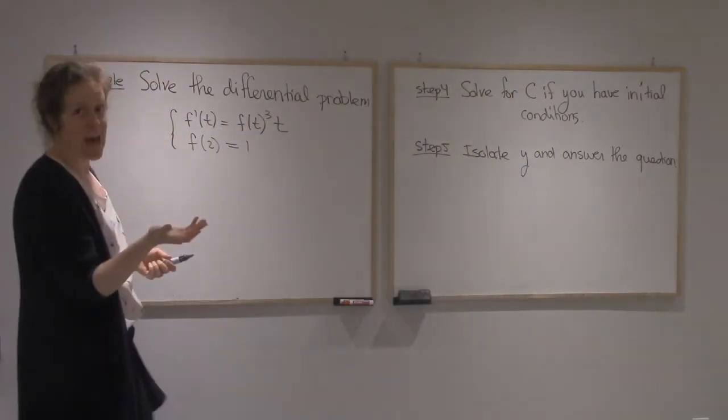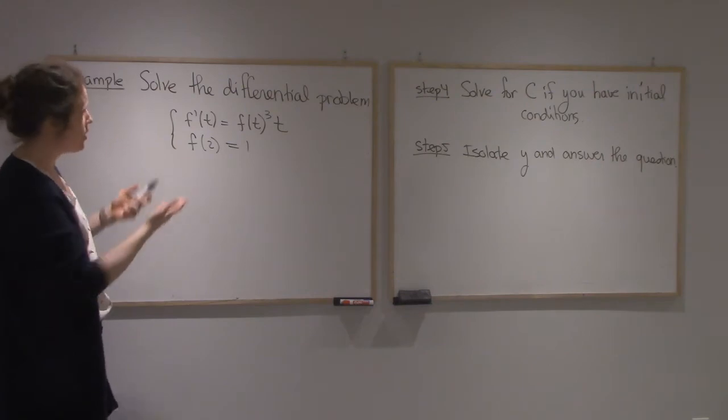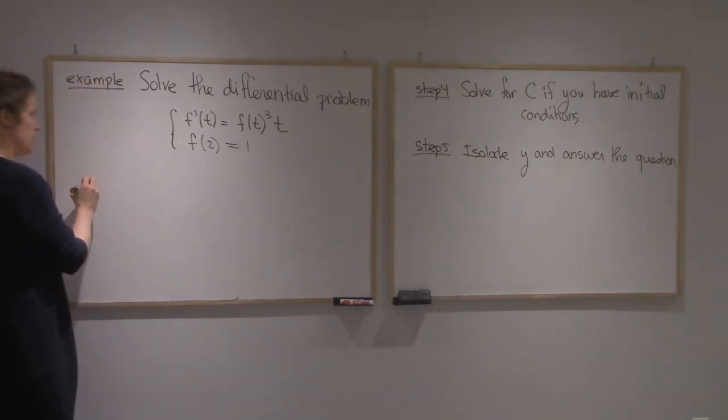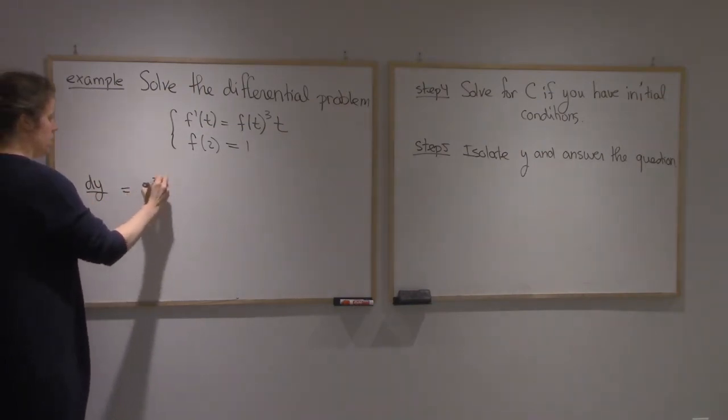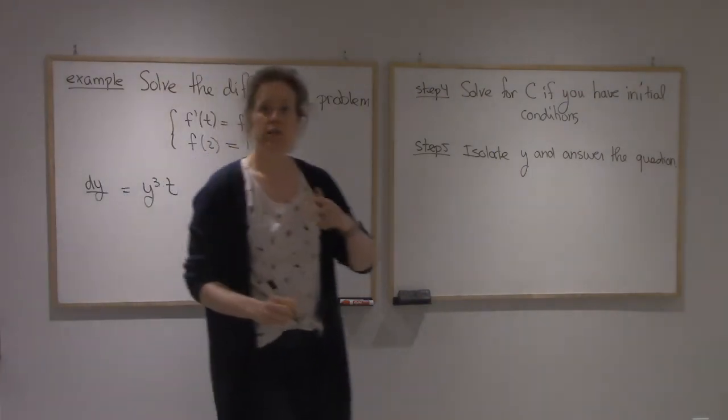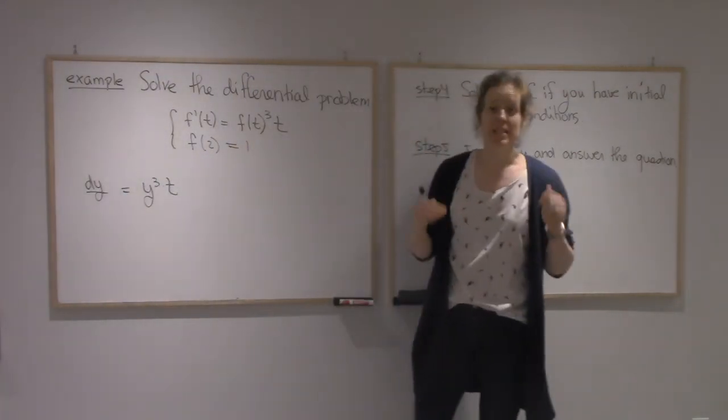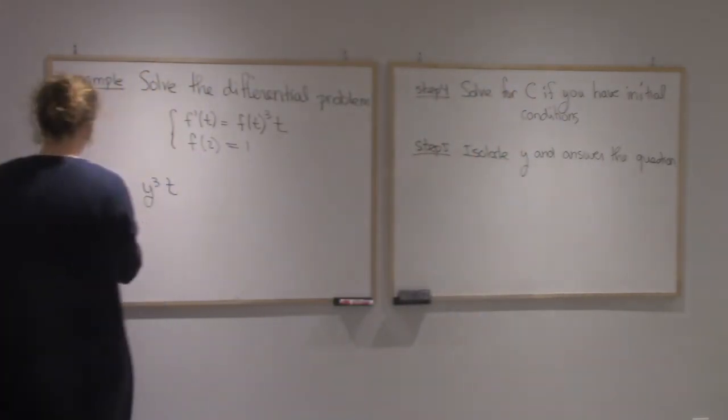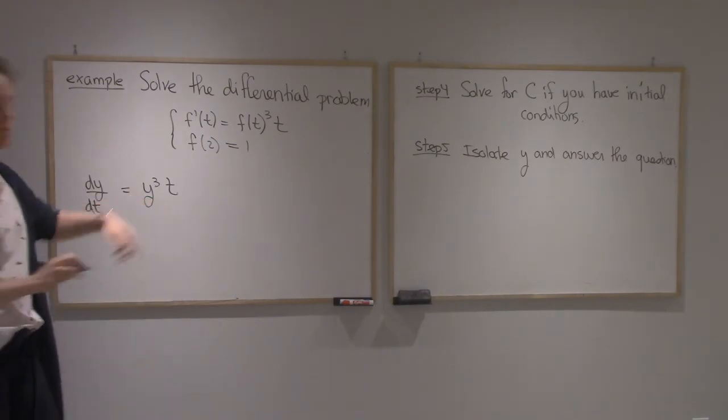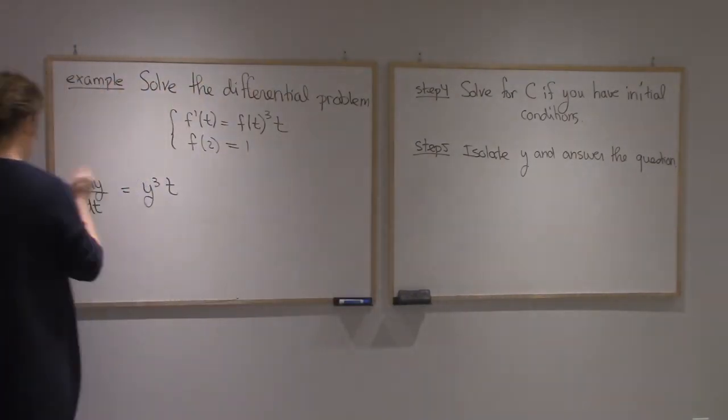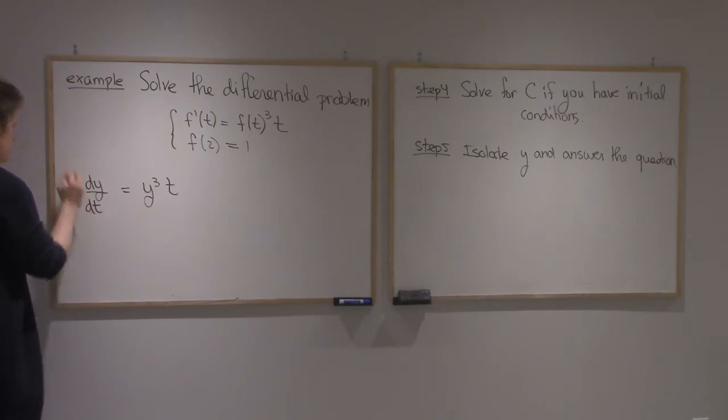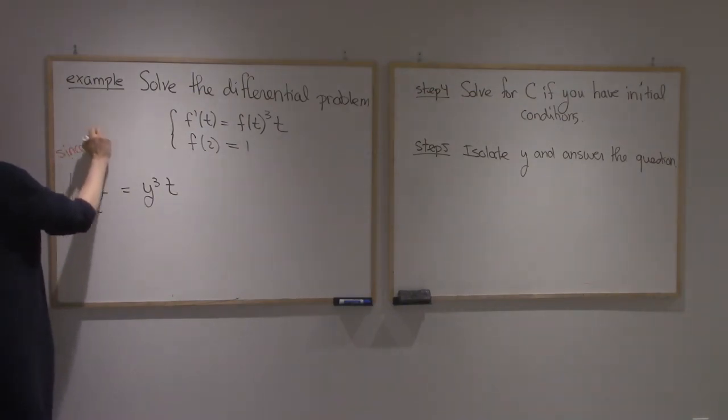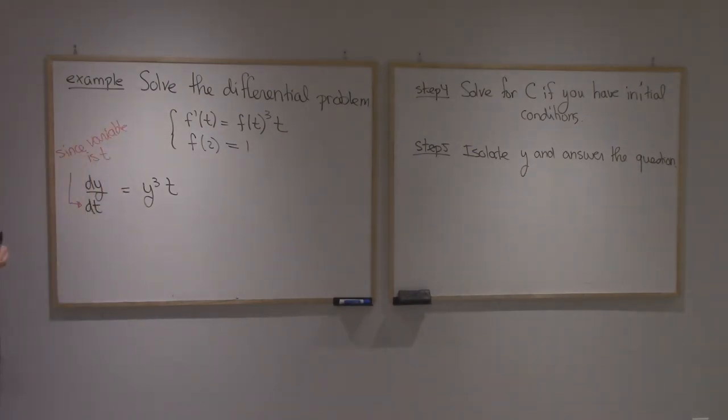Step 1 tells me to replace f if it's given as an f by a choice of variable. I'll choose y. So I'm going to have dy over, usually it's over x. I did this on purpose. In this case, it's not over x. The variable is t. So I'll have dy over dt equals y cubed t. So here, be careful. My variable is dy over dt.